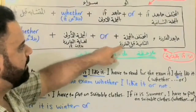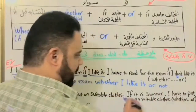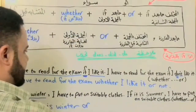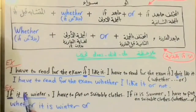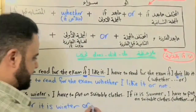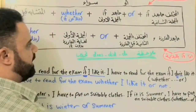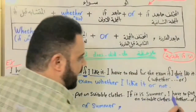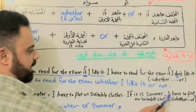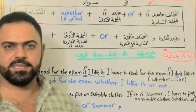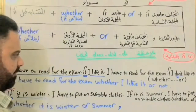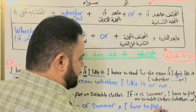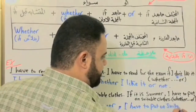المختلف بالجملة الثانية — هاي الجملة الثانية تبدي من بعد النقطة — المختلف بالجملة الثانية قبل الفارزة هو summer. الـ if نزلنا مكانها whether، it is summer — summer مختلفة إذن أنزل summer، ثم فارزة، وأنزل ما بعد الفارزة: I have to put on suitable clothes.